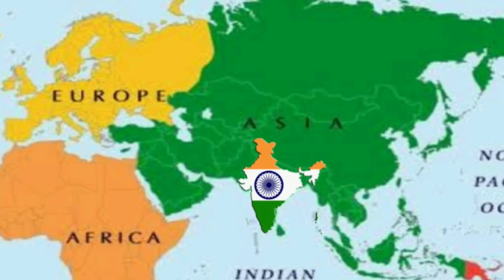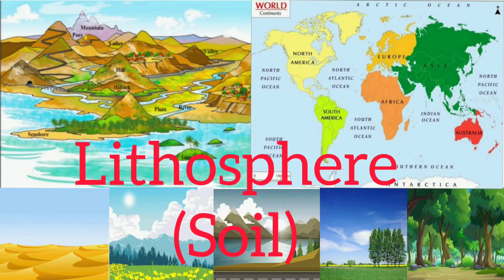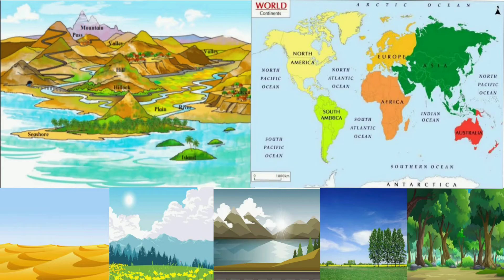So all these different landforms — mountains, valleys, hills, plains — and the seven continents are all included in the lithosphere.